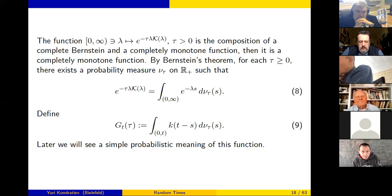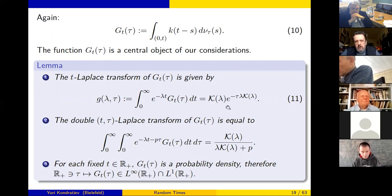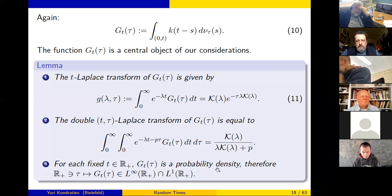The probabilistic meaning of this function will be shown shortly. We have information about this kernel: its Laplace transform in t has a particular form given via the function K(λ), and the double transform is also known. Importantly, for each t, this kernel g_t(τ) is a probability density.